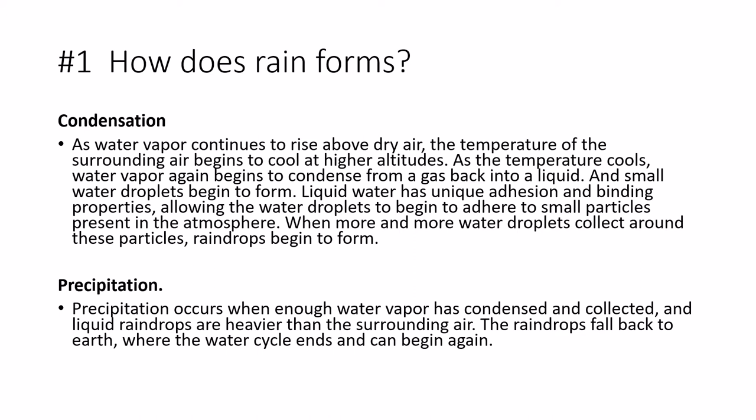The final step in the cycle is precipitation. Precipitation occurs when enough water vapor has condensed and collected, and liquid raindrops are heavier than the surrounding air. The raindrops fall back to earth, where the water cycle ends and can begin again.